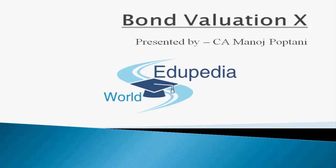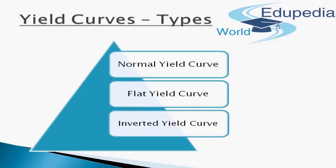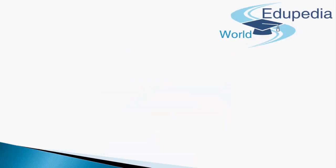We'll mark the beginning of this video with today's topic: Yield Curves. There are three main patterns created by the term structure of interest rates — those three yield curves are normal yield curve, flat yield curve, and inverted yield curve. We'll be talking about all three: normal, flat, and inverted, one after another.